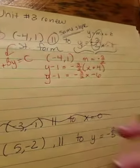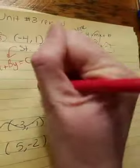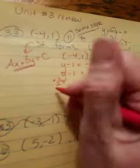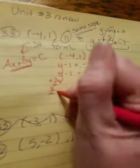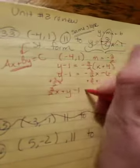So, now I'm going to add 3 halves x to both sides because I want to get x and y on the same side. Okay, so I have 3 halves x plus y minus 1 equals, those cross out, negative 6.